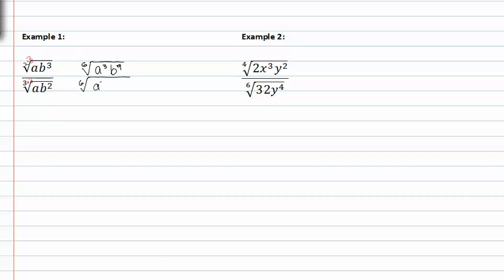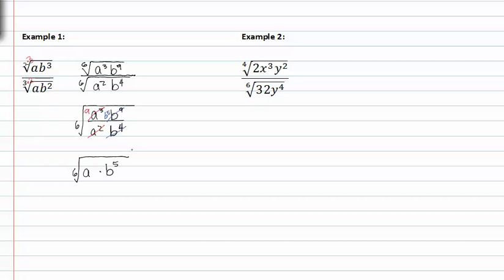In the denominator we'll have a to the second, b to the fourth. From here we can rewrite the fraction under one index, so we'll have a to the third, b to the ninth over a to the second, b to the fourth. Now it's much easier to reduce the common factors. A to the second and a to the third will reduce, leaving a in the numerator, and b to the fourth will reduce with b to the ninth, leaving b to the fifth in the numerator. Rewriting, we get a times b to the fifth. We didn't have to rationalize anything because nothing was left in the denominator.